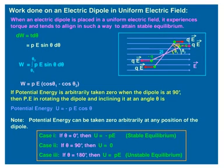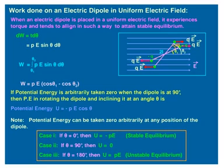Now, let us calculate the work done on an electric dipole in a uniform electric field. When an electric dipole is placed in a uniform electric field, it experiences a torque and tends to align to attain stable equilibrium. Mathematically, dW equals torque times d theta, and putting the value of torque gives PE sin theta d theta. Integrating within limits theta 1 to theta 2, we get work done as PE into (cos theta 1 minus cos theta 2).